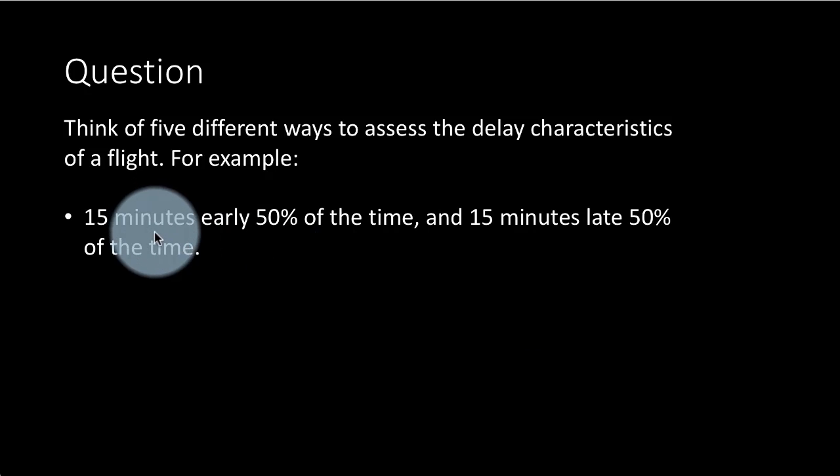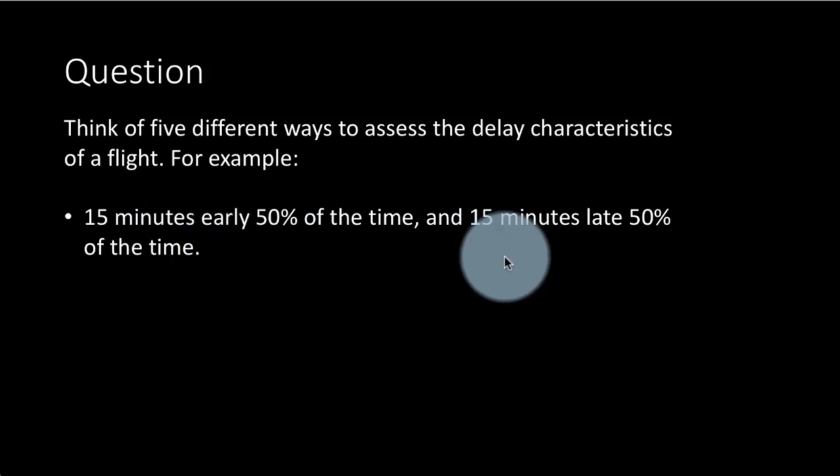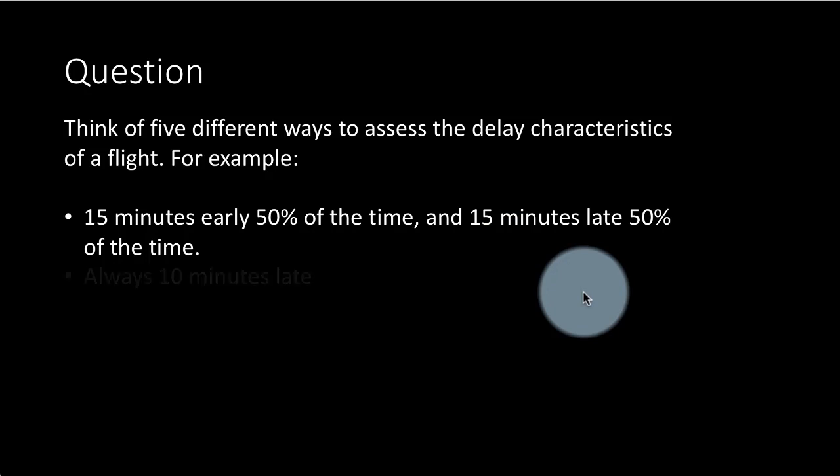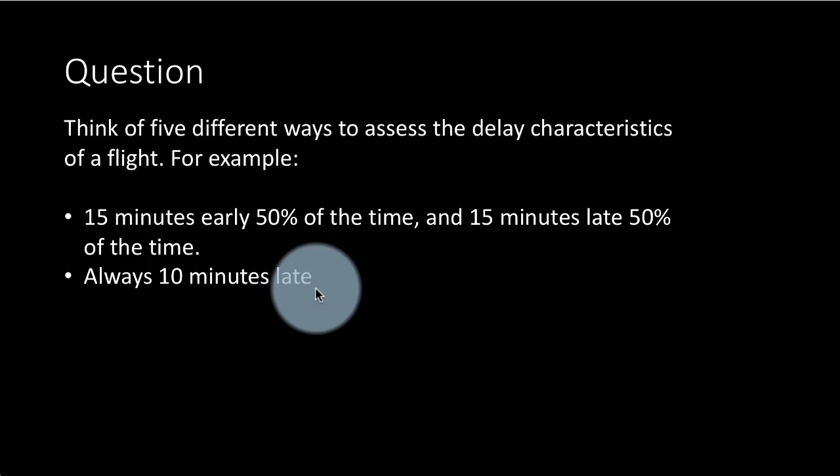Or you could also look at different distributions of delay. For example, if a flight is 15 minutes early half the time and 15 minutes late half the time, that's one possibility. Or you may have a chance that a flight is always 10 minutes late or predominantly 10 minutes late. Which one do you prefer?